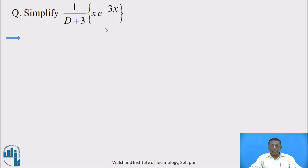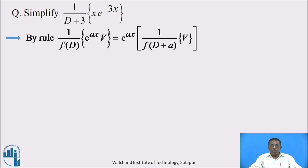Come back. I hope you have written the answer to this. Here is the solution. Using the rule: 1/f(D) operated on e^(ax)·v can be written as e^(ax) times 1/f(D+a) operated on v.